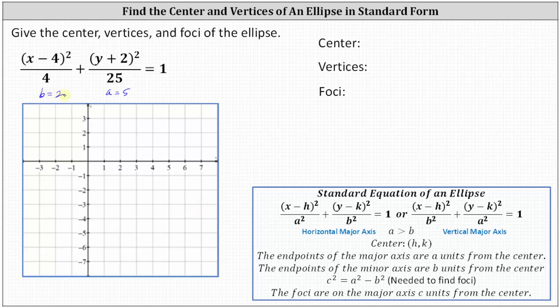Now let's find the center. Because we have the square of x minus four, four is the x-coordinate of the center. And because we have the square of y plus two, negative two is the y-coordinate of the center. Let's go ahead and plot the center at (4, -2).